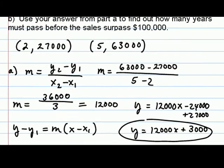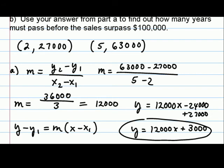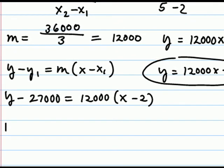Let's look back at part B. Part B says, use your answer from part A to find out how many years must pass before the sales surpass $100,000. To approach this problem, we're going to use the results of part A, y equals 12,000x plus 3,000.